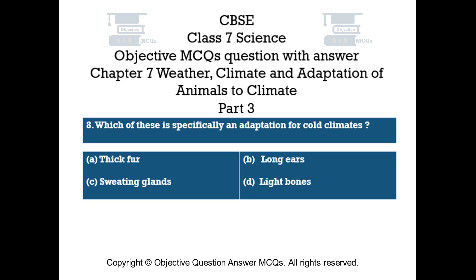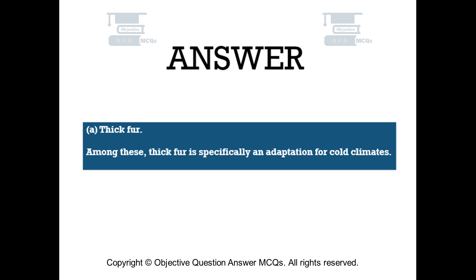Question number 8. Which of these is specifically an adaptation for cold climates? Option A: Thick fur. Option B: Long ears. Option C: Sweating glands. Option D: Light bones. The right answer is Option A — Thick fur. Among these, thick fur is specifically an adaptation for cold climates.